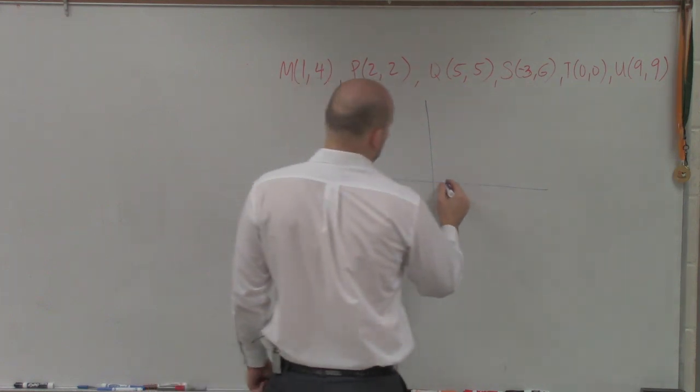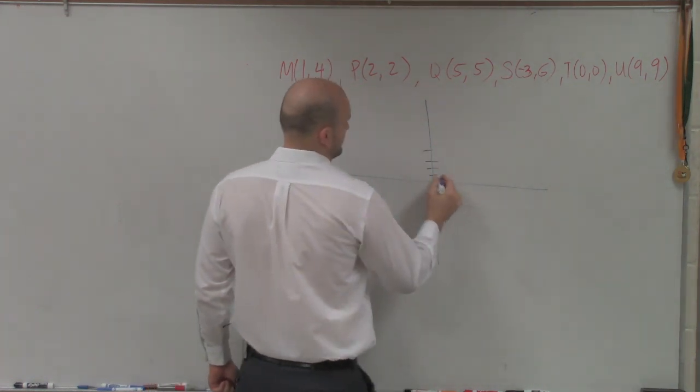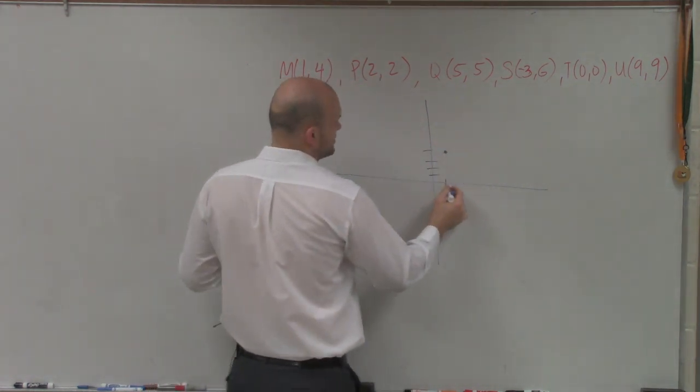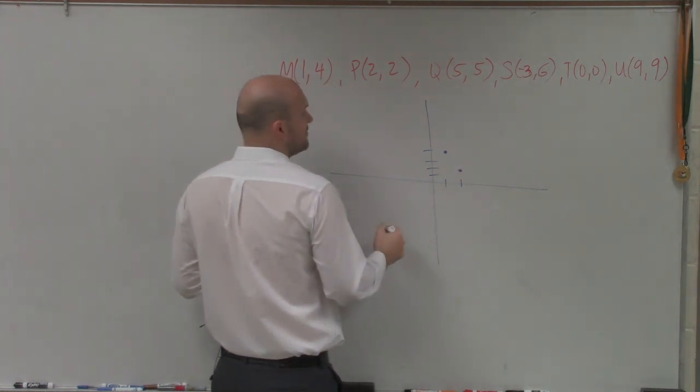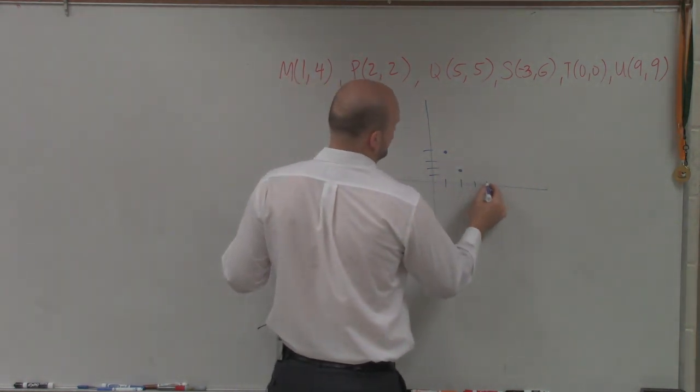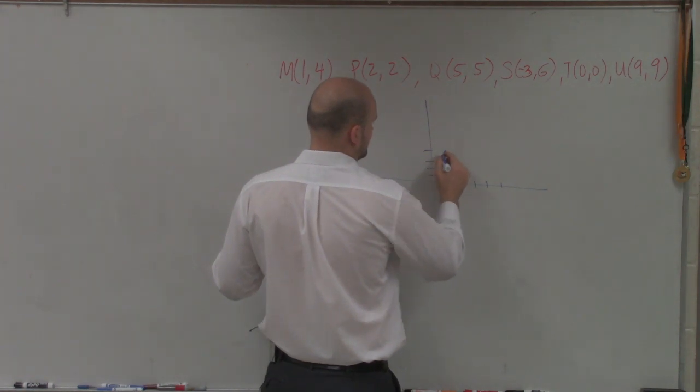The first point is (1, 4). Then we have (2, 2). Then we have (5, 5): 1, 2, 3, 4, 5; 1, 2, 3, 4, 5.